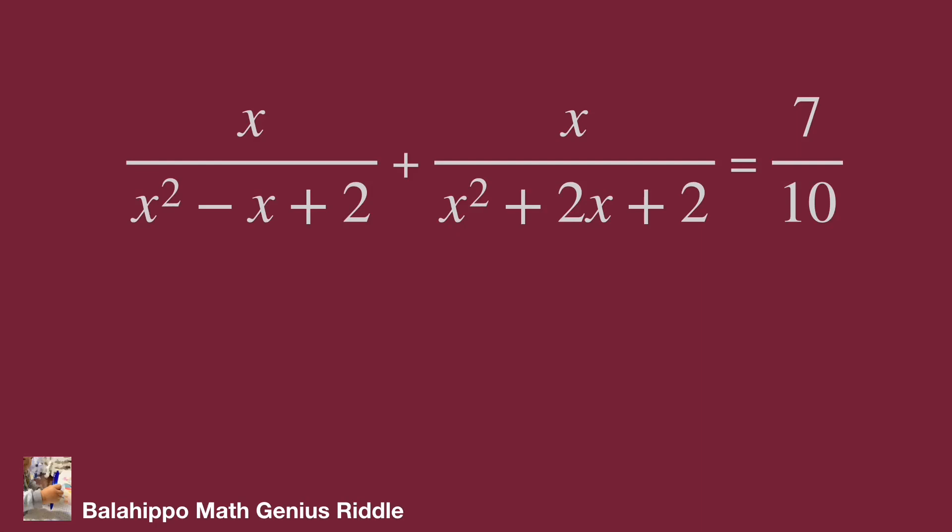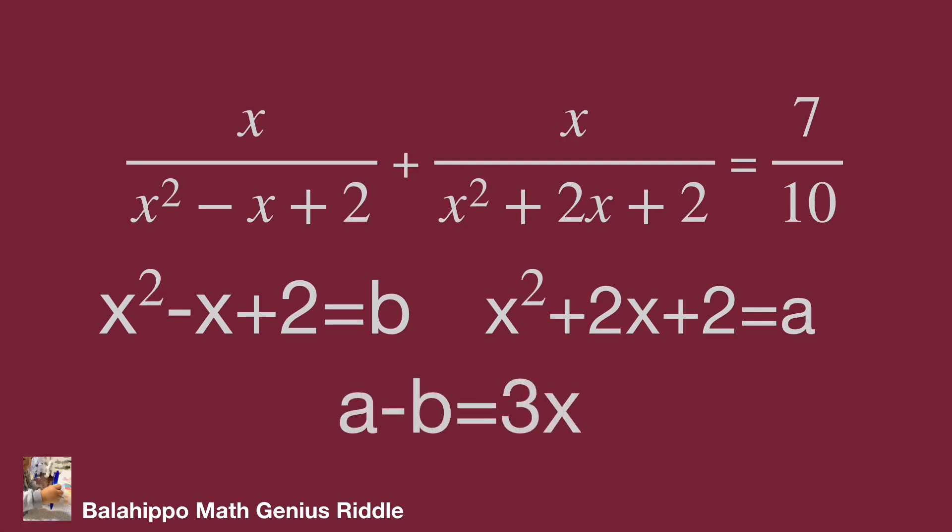Take a look at each fraction in the left side of the equation. If we subtract x squared minus x plus 2 from x squared plus 2x plus 2, we can eliminate x squared and plus 2, and get some certain number times x. And the numerator of each fraction, there is x. This is a new finding. So I define x squared plus 2x plus 2 equal to a, x squared minus x plus 2 equal to b. Then a minus b equal to 3x, so x equals a minus b over 3.